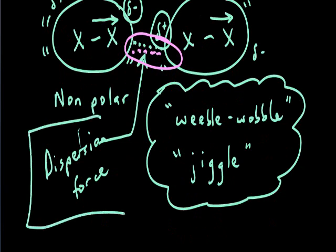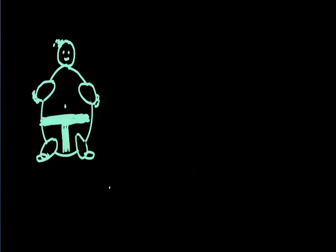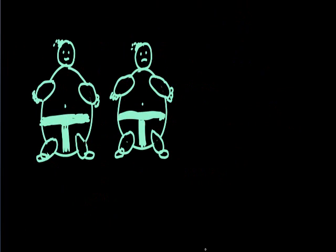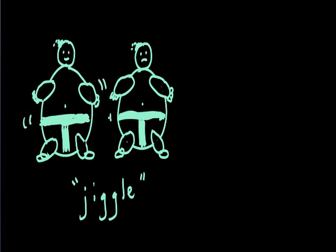Not all dispersion forces are equal. The shape and size of molecules influence the size of a dispersion force. As an analogy, consider a sumo wrestler: sumo wrestlers have a lot of mass and a lot of jiggle. In contrast, a ballerina has very little jiggle. A sumo wrestler is large; a ballerina is small.